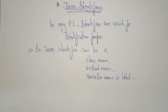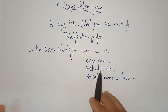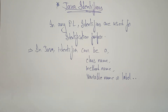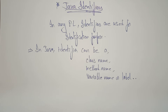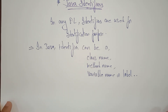So in Java, identifiers can be a class name, method name, variable name, or a label. You will learn all these in the coming videos — what is a class name, method name, variable name. I'll show a simple example. Even if you don't understand it yet, don't worry.